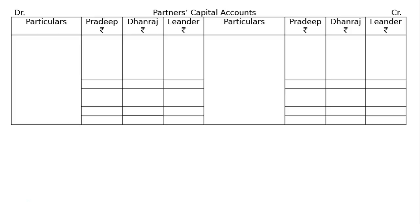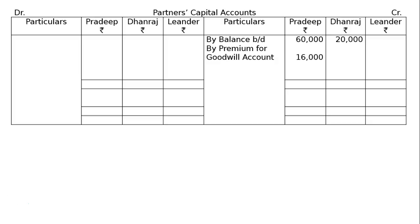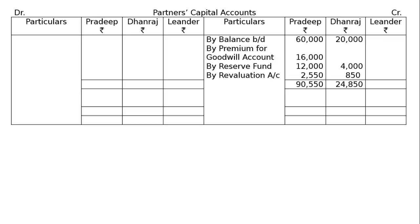Now, partners' capital accounts — debit and credit with particulars on both sides. Balance brought down: Rs. 60,000 for Pradeep and Rs. 20,000 for Dhanraj as per the question. By premium for goodwill account: the entire amount will be payable to Pradeep, nothing will be paid to Dhanraj, because Pradeep is only sacrificing. Next: by Reserve Fund appearing in the liability side, Rs. 16,000, distributed among old partners in old ratio 3 to 1 — Rs. 12,000 and Rs. 4,000. By Revaluation Account profit: Rs. 2,550 for Pradeep, Rs. 850 for Dhanraj. Totaling the capital account of Pradeep: Rs. 90,550; for Dhanraj: Rs. 24,850.